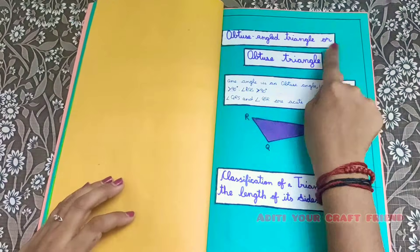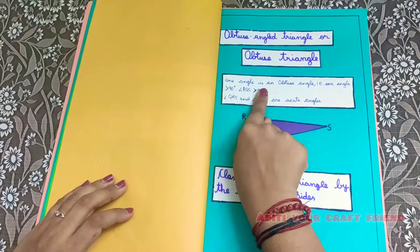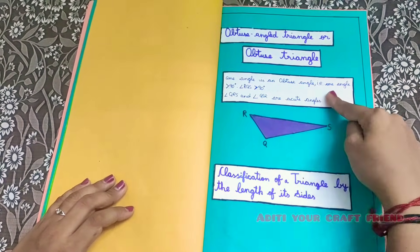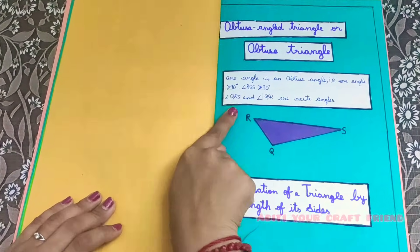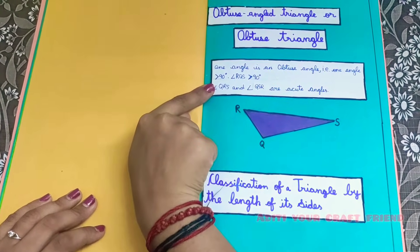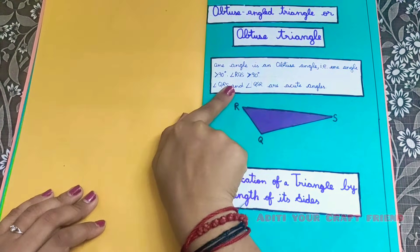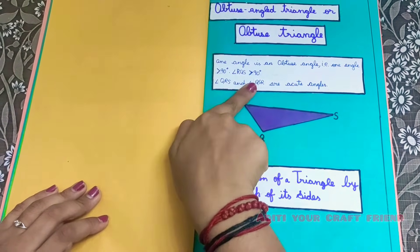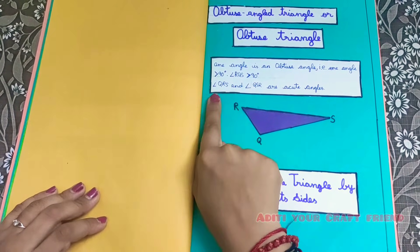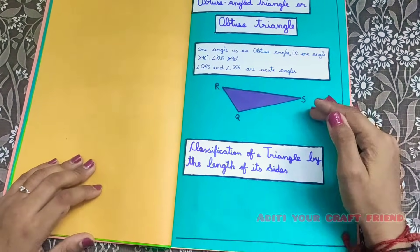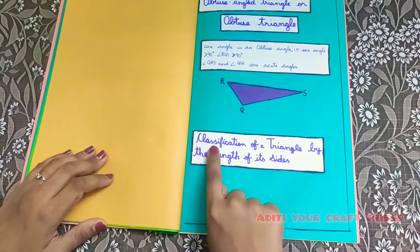Obtuse angle triangle: one angle is an obtuse angle, that is, one angle is greater than 90 degrees. Angle RQS is greater than 90 degrees. Angles QRS and QSR are acute angles. This is an example of an obtuse angle triangle.